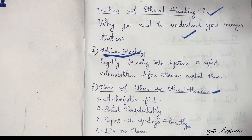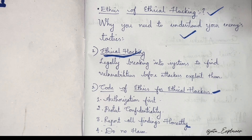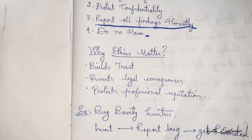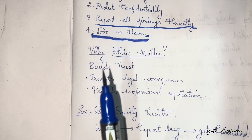The second principle is to protect confidentiality — whatever the ethical hacker discovers, they must protect that information for the welfare of the organization. Third, report all findings honestly — if I break into your computer and find something vulnerable, I must report everything to you in detail so you can correct it. Fourth, do not harm — even if vulnerabilities are found, the ethical hacker must not use them to harm the system.